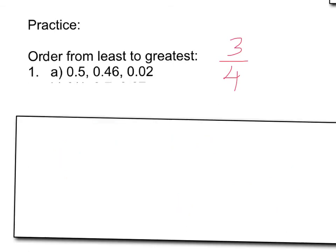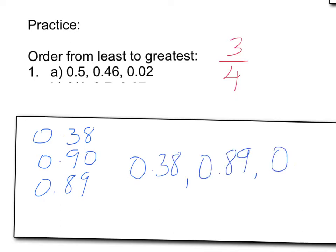All right, lastly, 0.38, 0.9, and 0.89. Again, I'm going to make that into equivalent decimals, so it's easy to compare. I can now easily compare: 0.38 is smallest, 0.89 is next, and 0.9 is largest.